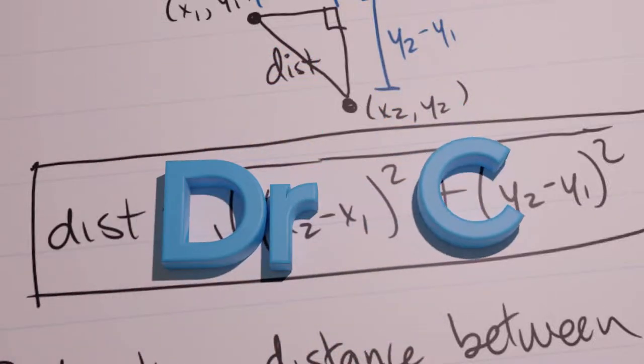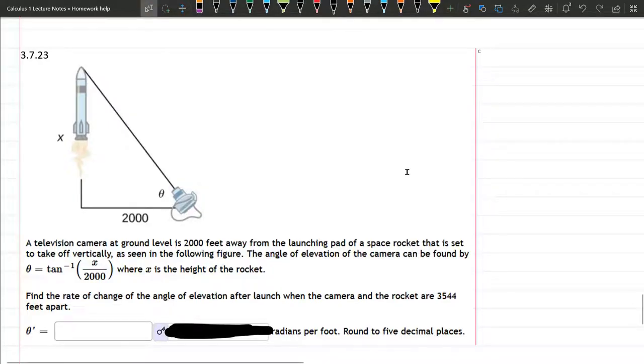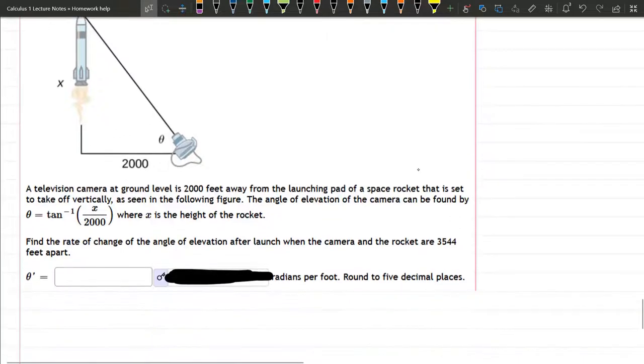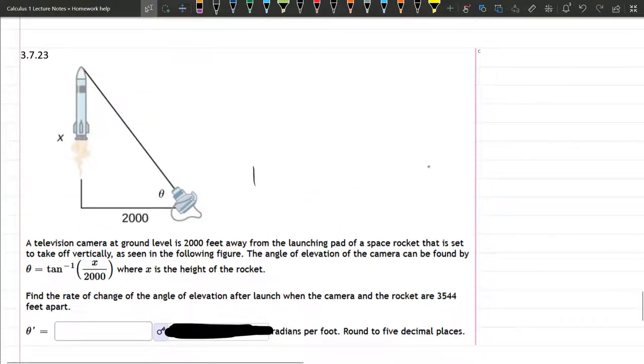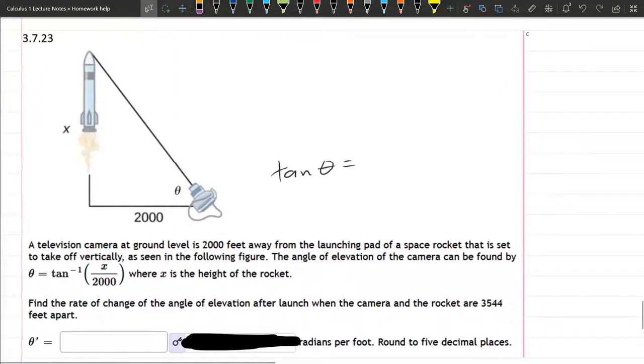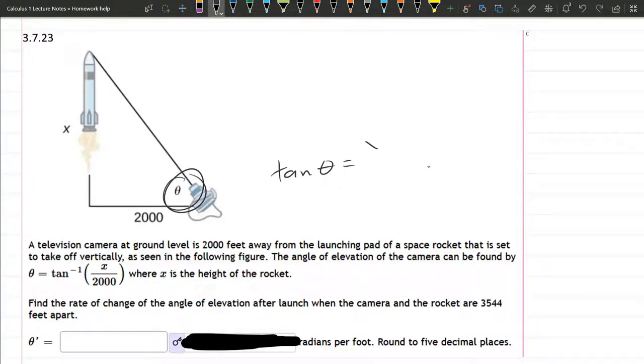In this problem, we have a right triangle, and we know information about some sides and an angle. They already give us how they're related. Normally, I would write the relationship as tangent theta equals opposite. So here's the theta angle, opposite is x over adjacent is 2,000.